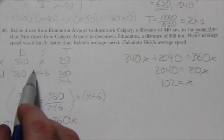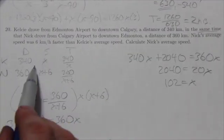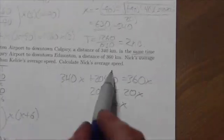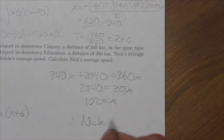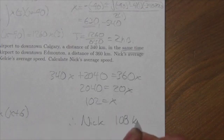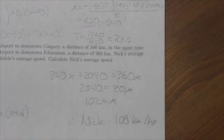Now, that, remember, X, got to go back to your chart here, that's Kelsey. So to figure out what Nick's average speed is, I simply have to add six. Therefore, Nick went 108 kilometers per hour. Here we go.